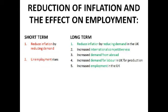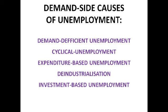We're now going to look at demand-side causes of unemployment. Demand-deficient unemployment encapsulates them all — it's when there's insufficient aggregate demand in the economy to employ available labour. This goes hand in hand with cyclical unemployment: when you're in a negative output gap, aggregate demand is below the full employment level, so people lose their jobs because there simply isn't the demand for the goods and services they would have been producing, leading to a negative multiplier effect.